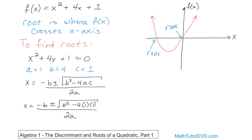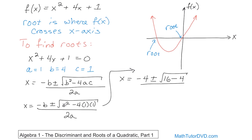Continuing this work: x equals — note that b was equal to 4, so we write negative 4 plus or minus. On the inside, 4 squared is 16 minus 4 times 1 times 1, which is just 4. On the bottom, 2 times a where a equals 1, so 2 times 1 is 2.